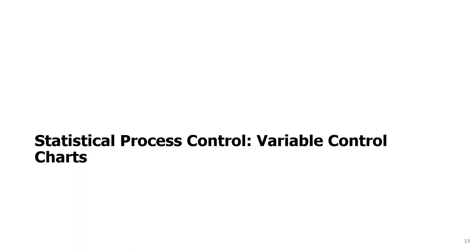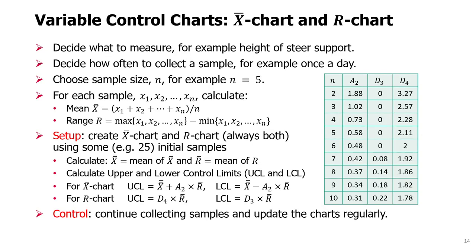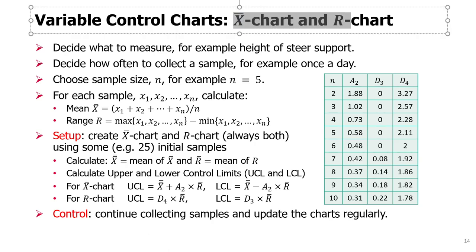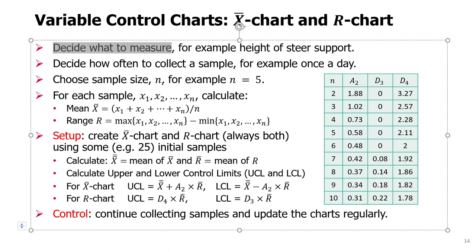Statistical process control, variable control charts. In order to control some measurement, we will use variable control charts, and they always are used as a pair. They are called X-bar chart and R-chart. In the process of setting them up, first of all we have to decide what we want to measure. In our example, it will be the height of steer support, where steer support is a part of a scooter that we're producing, and we're really concerned that this height is accurate for all parts.